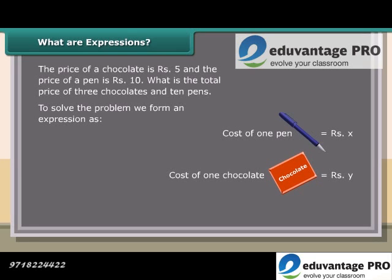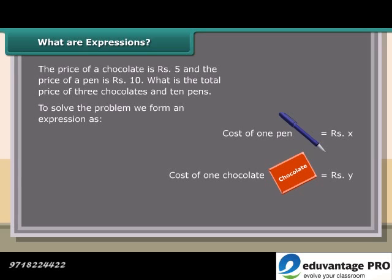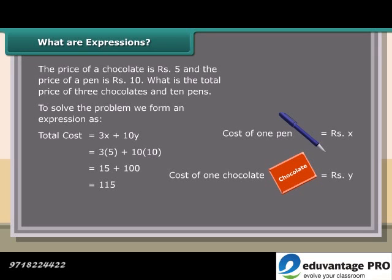Cost of 3 chocolates is equal to rupees 3y. Cost of 10 pens is equal to rupees 10x. Total cost is equal to 3x plus 10y, which is equal to 3 into 5 plus 10 into 10, which equals 15 plus 100, which equals 115. Total cost is equal to rupees 115.